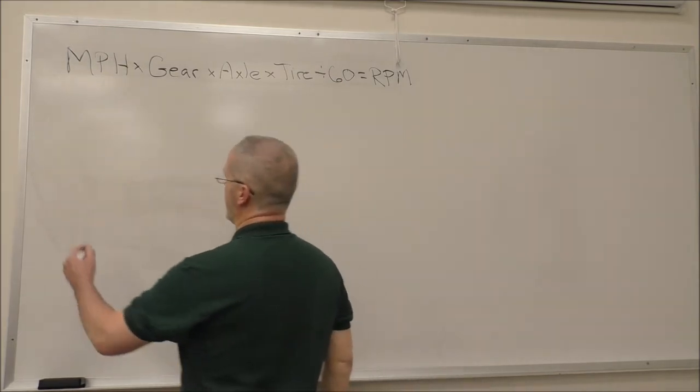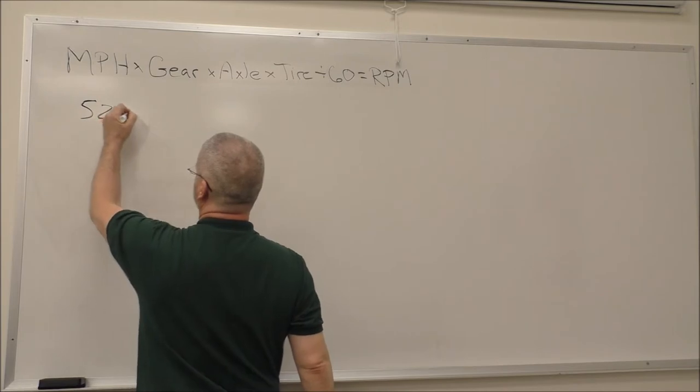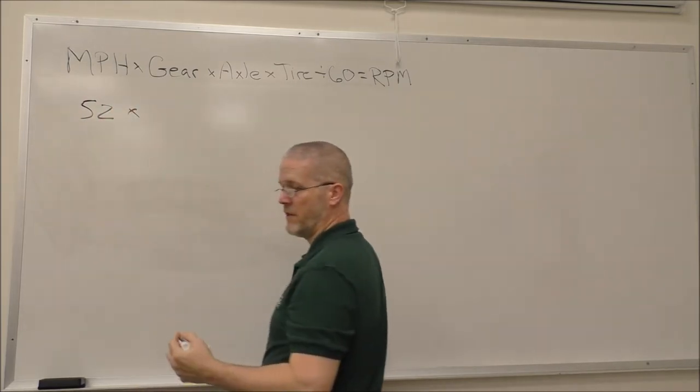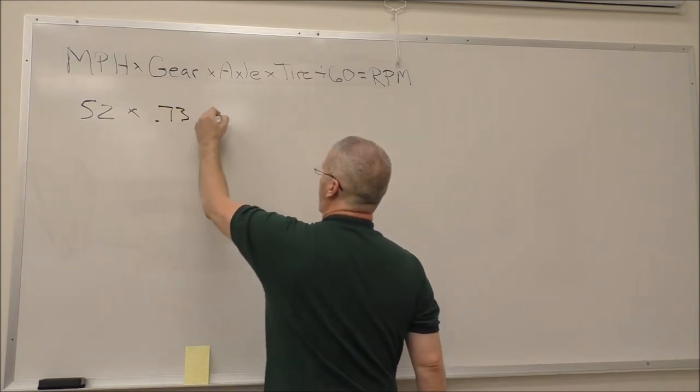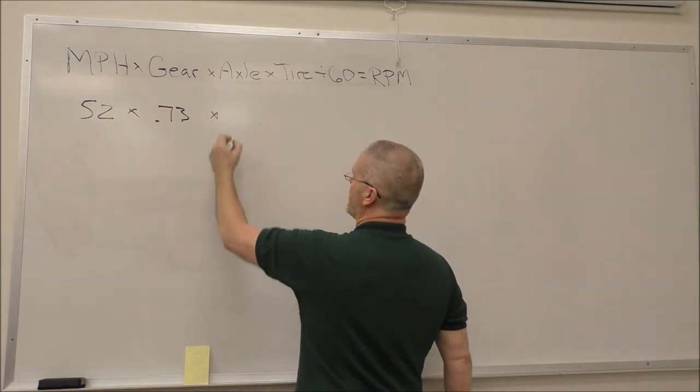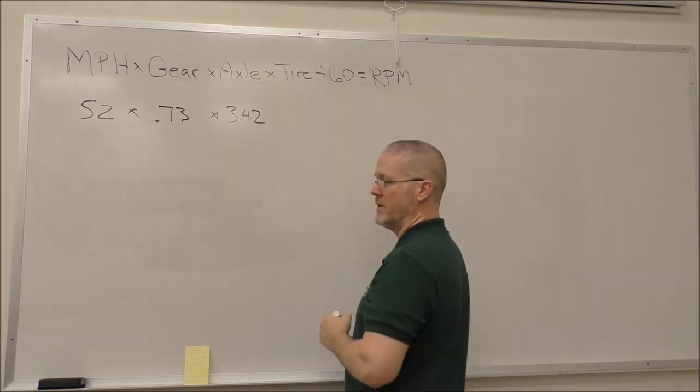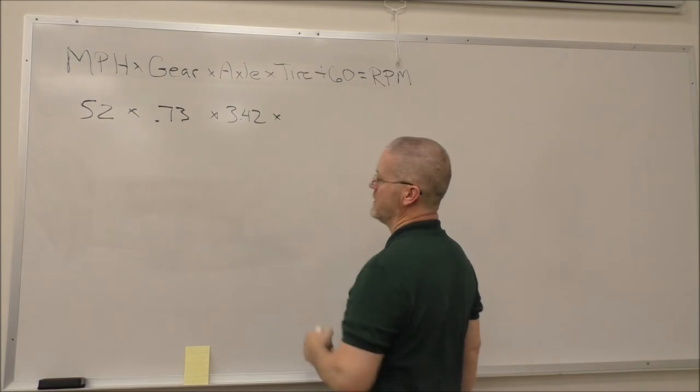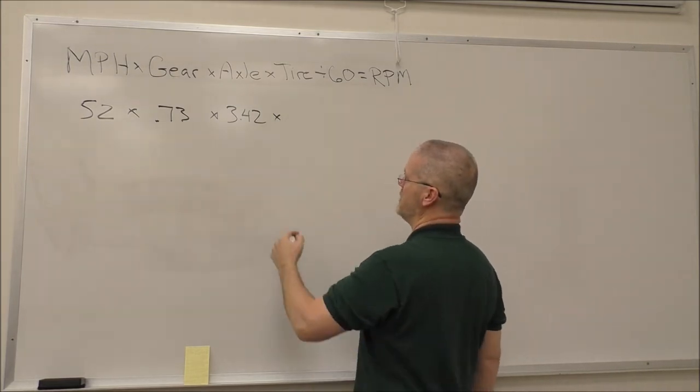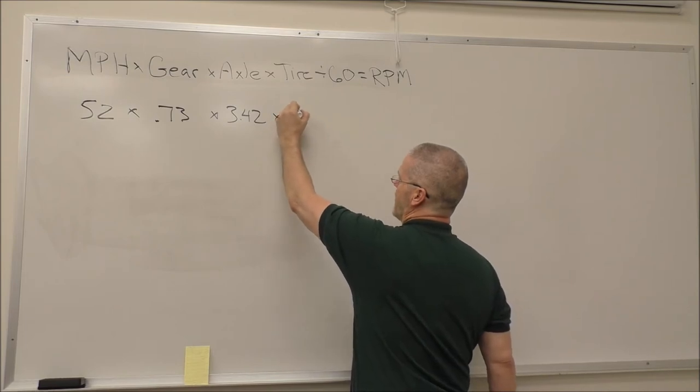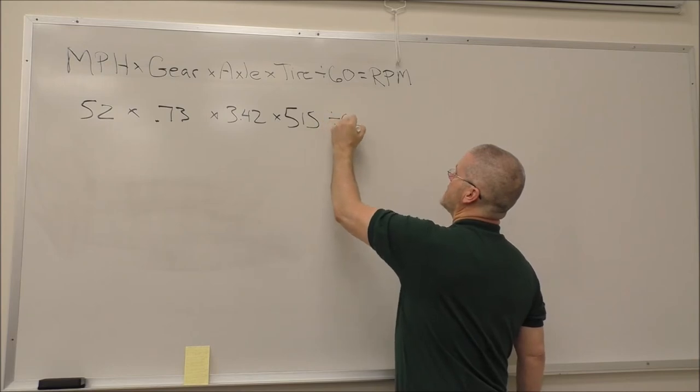So if we are driving down the highway at 52 miles an hour and we're in tenth gear in a 10-speed transmission, that gear ratio is 0.73. For our hypothetical truck, we're going to use an axle ratio of 3.42. That's fairly common in the industry. The most popular tire size here in the U.S. is a low-profile 22.5. Those are usually approximately 515 revolutions per mile. We divide all that by 60.